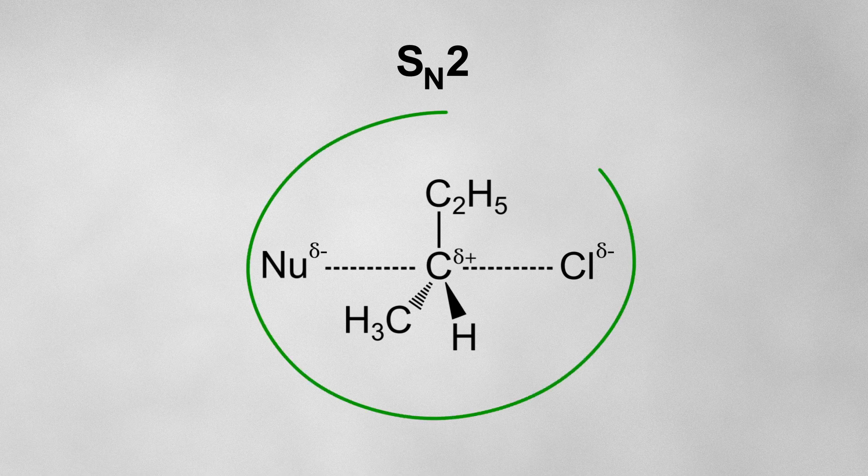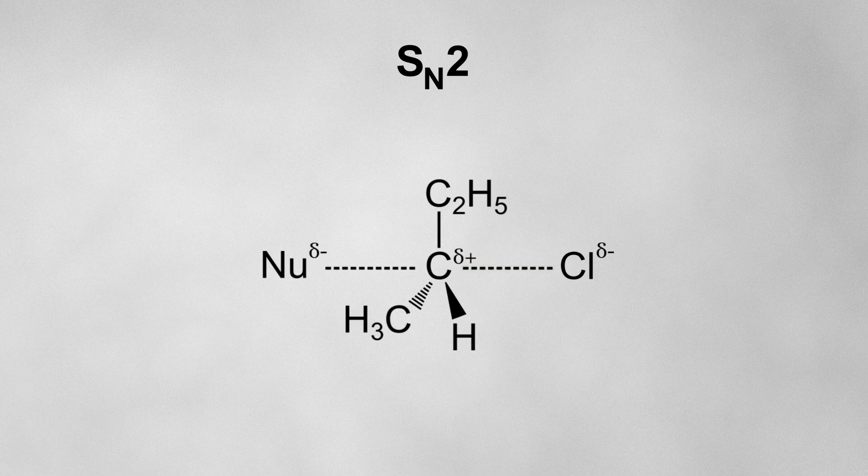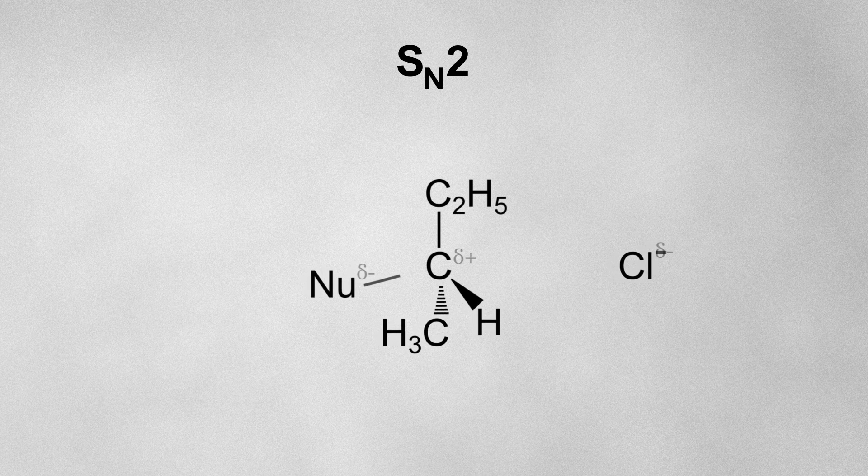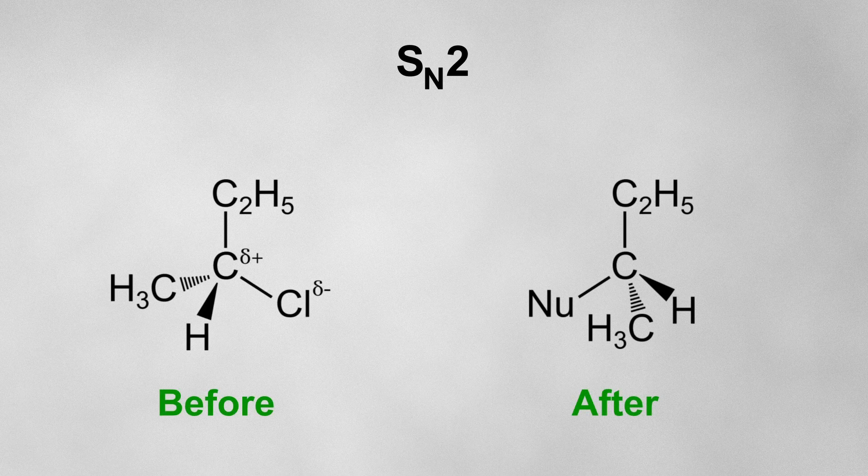In this transition state, we can see that the bond to the nucleophile is partly formed, and the bond to the halogen is partly broken. As the nucleophile continues to move in, the halide ion continues to move away, and we're left with this product. Notice that the bonds around the carbon centre are inverted during the reaction.